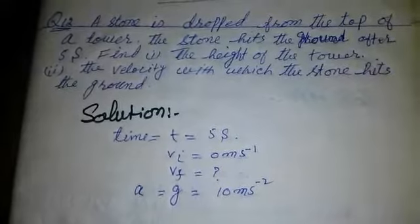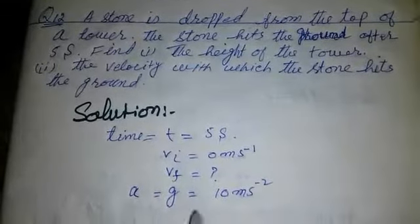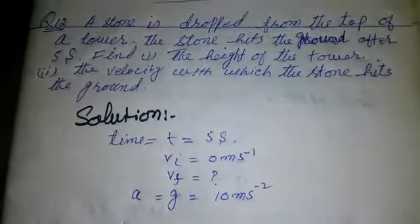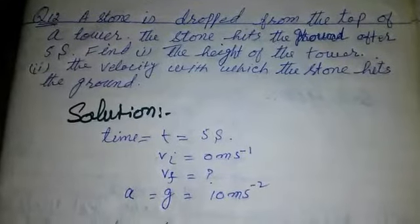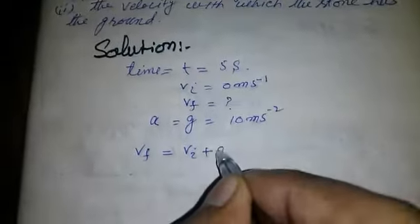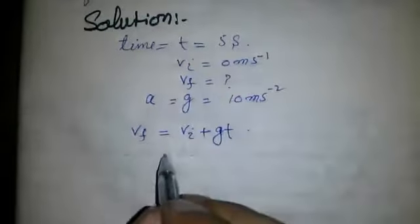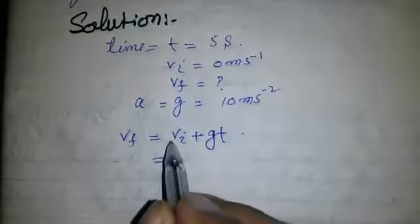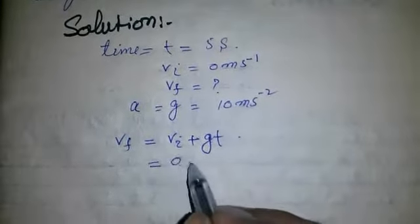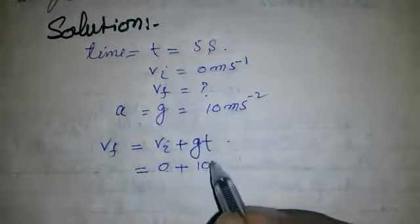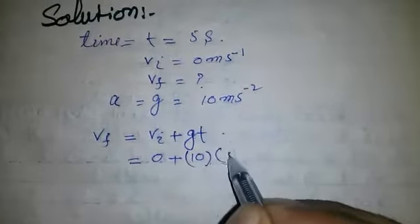Simply we use the first equation. vf equals vi plus gt. vf equals vi is 0 plus 10 into 5.